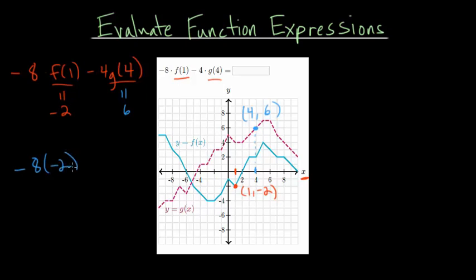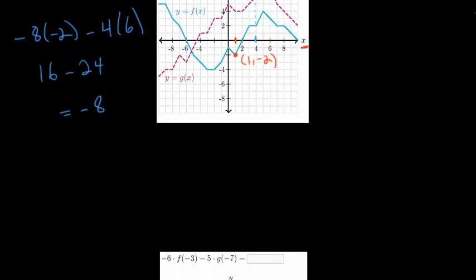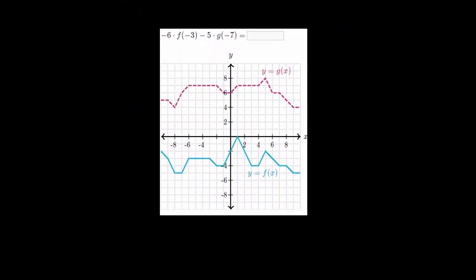So we have minus 8 times minus 2, and then minus 4 times 6. Notice that when I substituted negative 2 in for f of 1, I put it in parentheses — same for g of 4. It really matters when substituting a negative number; that way you can avoid potential mistakes with signs. So minus 8 times minus 2 is positive 16, and minus 4 times 6 is negative 24, giving us minus 8.